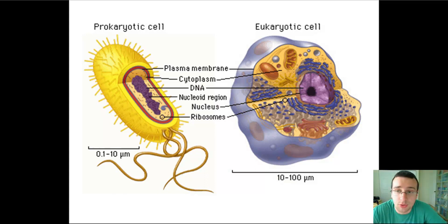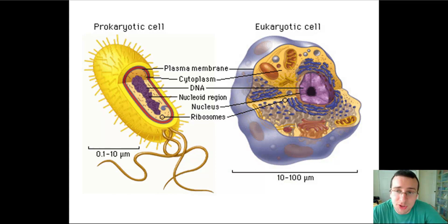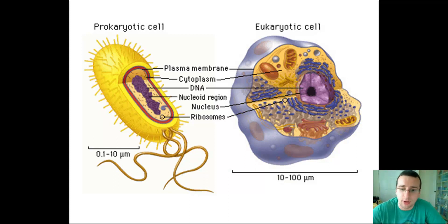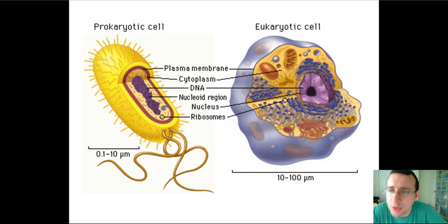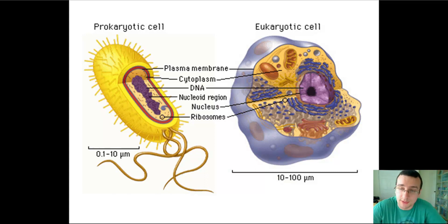The gene structure is also very different. The regulation systems and the untranslated regions, as well as the introns and exons, are all different. Prokaryotic cells basically only have the coding sequence of the DNA. They don't have any of the other stuff that helps regulate protein synthesis and stability of the genetic code.